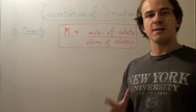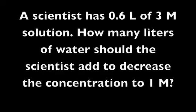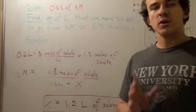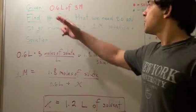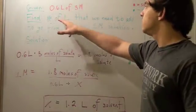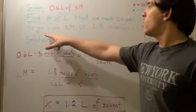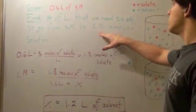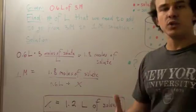Now, let's do an example using molarity. The question tells us that we have 0.6 liters of a 3 molar solution. We need to find the number of liters that we need to add to go from 3 molar to a 1 molar solution. So we're diluting.